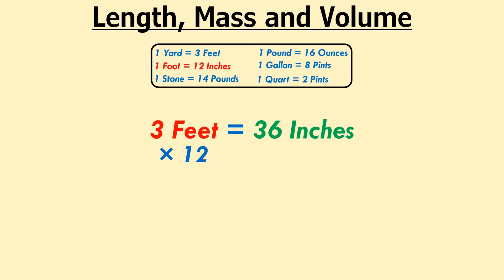Now, onto pints. How many gallons are there in 16 pints of beer? Wait, did I say beer? Just kidding. There are 8 pints per gallon, so divide 16 by 8 to give 2. 2 gallons is the answer.